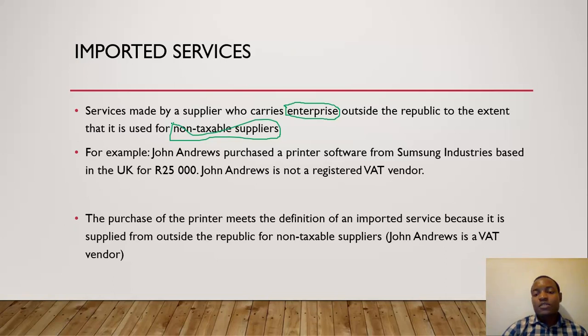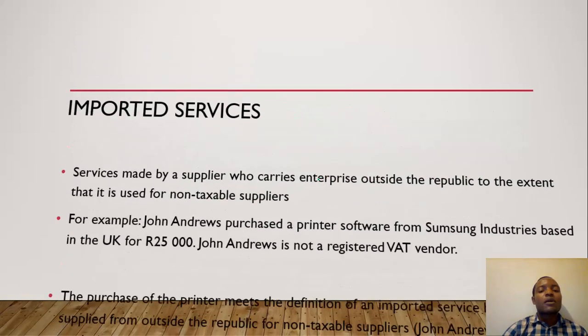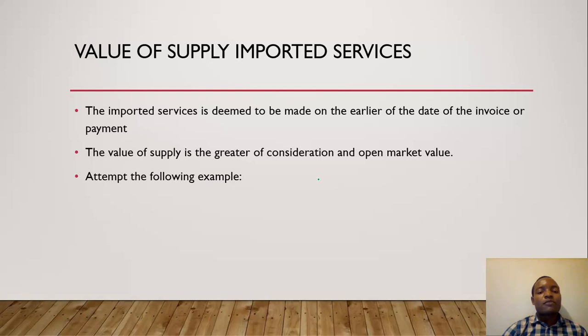We have a quick example. John Inris purchased a printer software from Samsung Industries based in the United Kingdom for $25,000. John Inris is not a VAT vendor. So applying our definition, this service was supplied by a supplier who carries an enterprise outside the Republic, they're based in the UK, so that one is checked. To the extent that used for non-taxable supply, John Inris is not a registered VAT vendor, therefore we meet that. Because if you're not registered VAT vendor, it means everything you do isn't taxable. So it's important for us to understand that previous slides before we move forward.